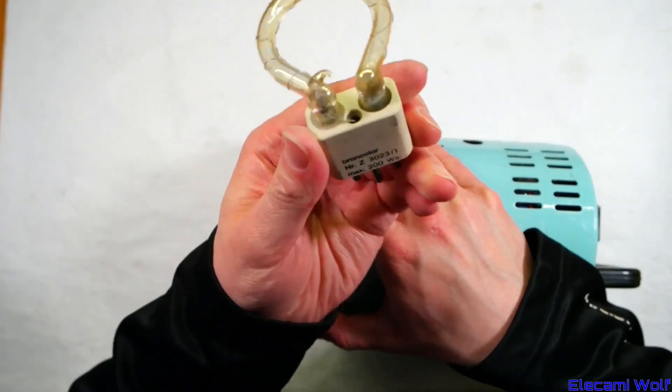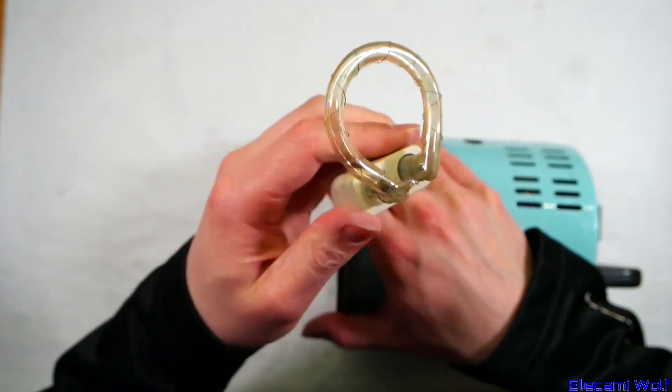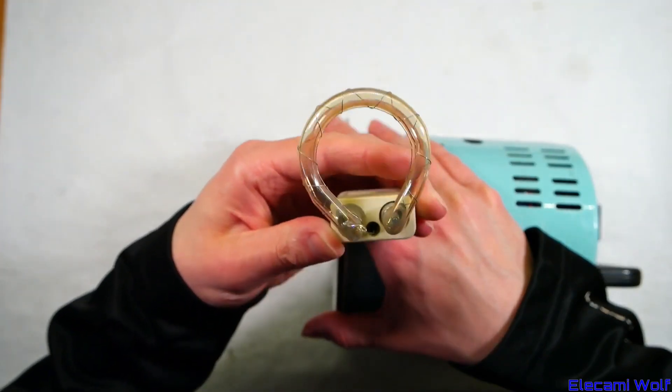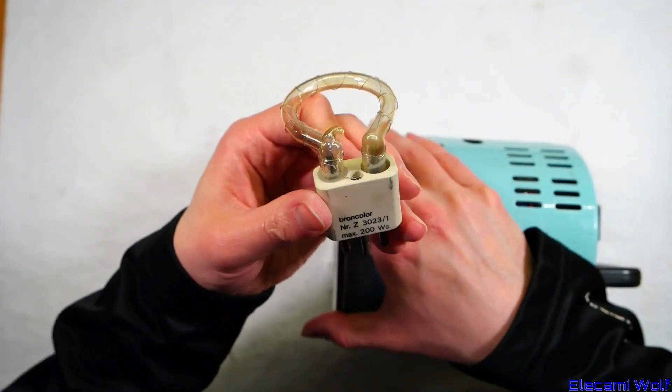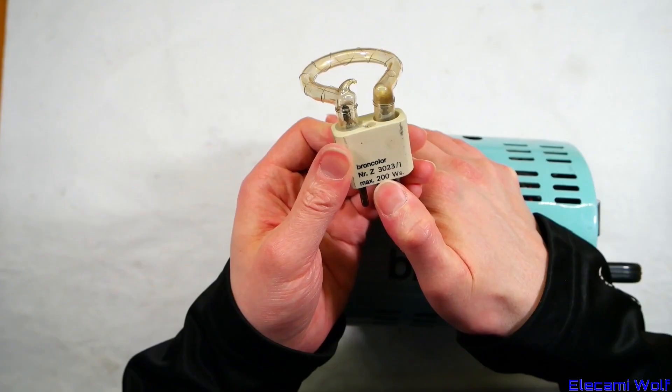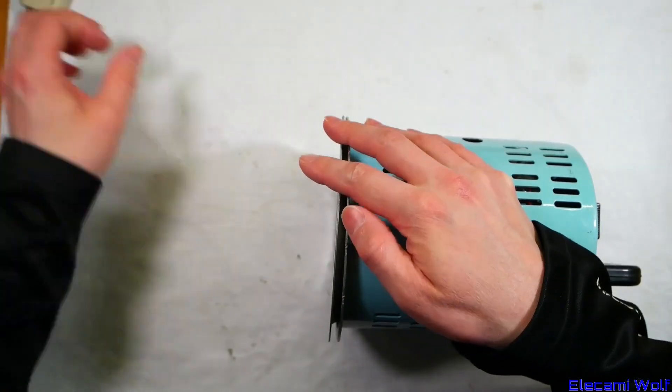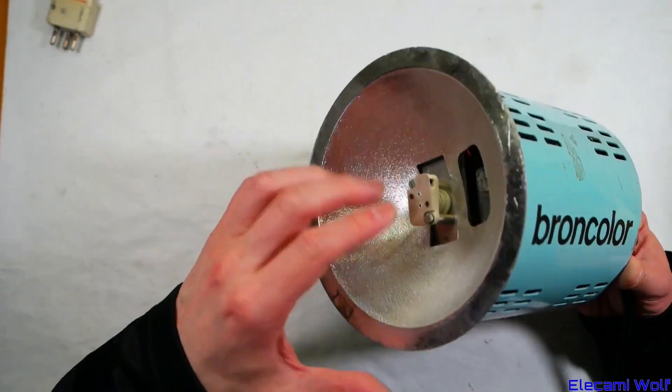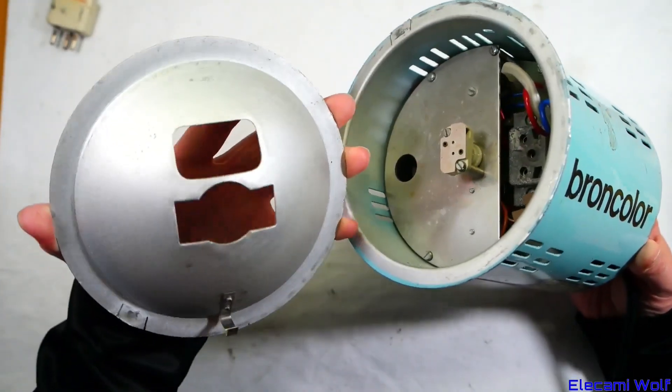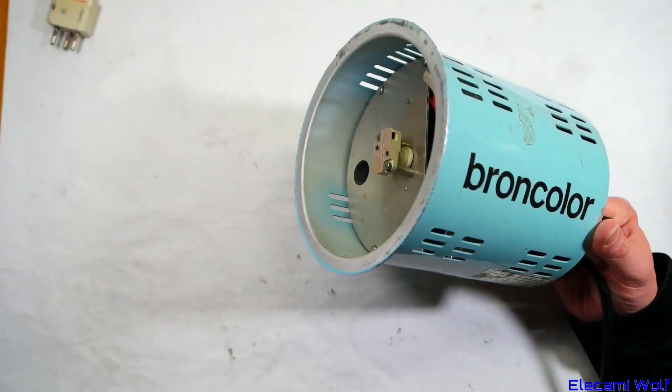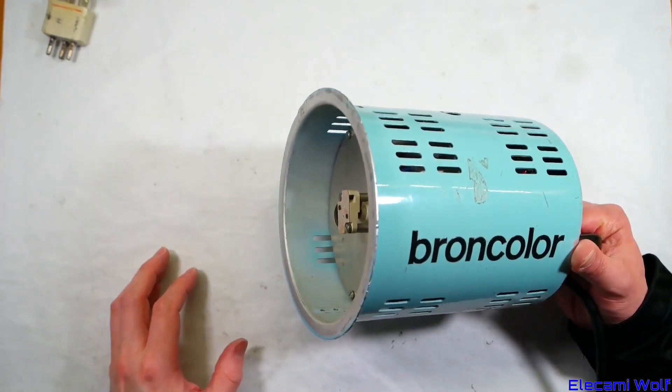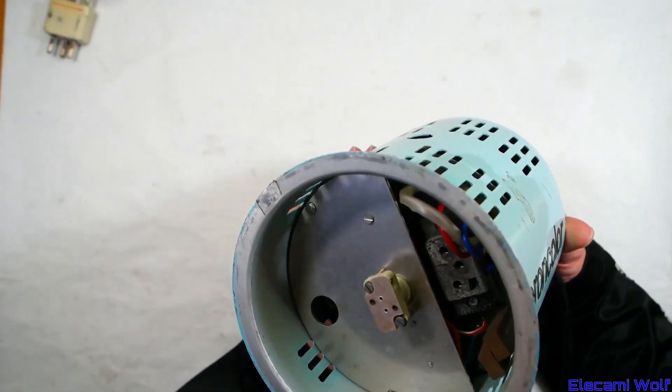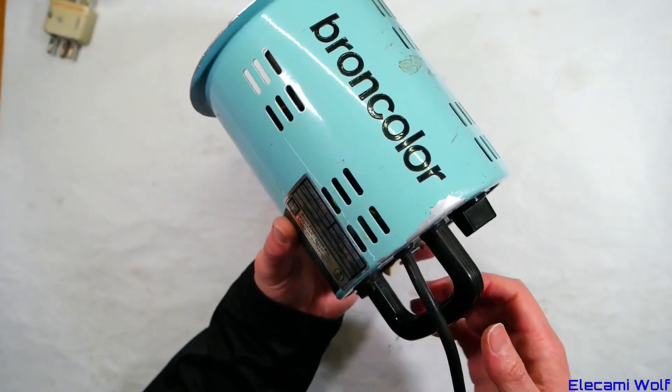Xenon flash tube, a bit manky at the ends, got a kind of yellowy tint to it which would be the UV blocking coating. No idea if it works. This one's only rated at 200 watt seconds or 200 joules, and these kind of units can go up to two or three kilojoules depending on a lot of things. We'll have a look at some bigger ones soon.